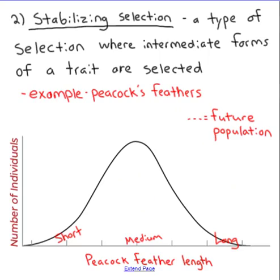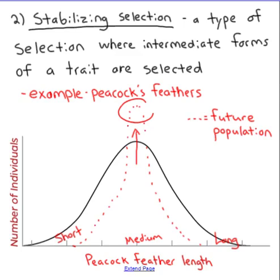Next is stabilizing selection, where the intermediate or average form of a trait is selected. The best example is peacock feathers. Having really short feathers is bad because long feathers attract mates and can scare away predators. Having really long feathers is also bad because you can't run away from predators — very long feathers slow you down. As a result, the average version of the trait is favored: short is selected against, long is selected against, and the medium trait is selected. That's stabilizing selection.